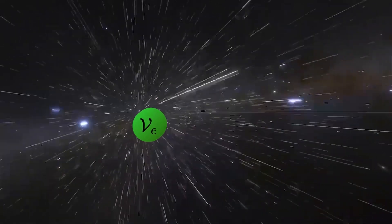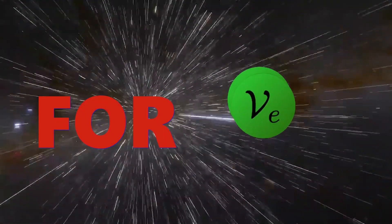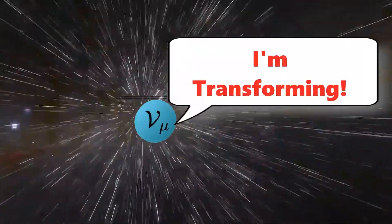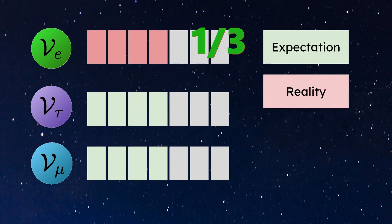When an electron neutrino is emitted from the sun, we used to think that it would be the same electron neutrino forever. However, experiments found that neutrinos can actually convert into the two other flavors. And that's why we only detect one-third of our expectation.